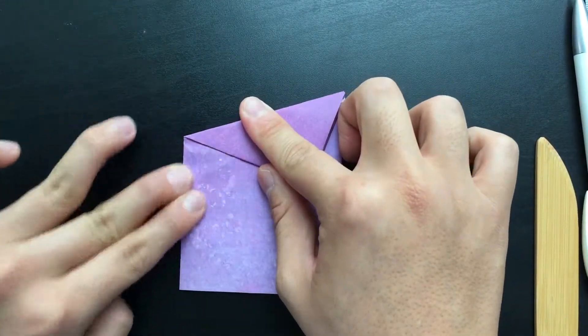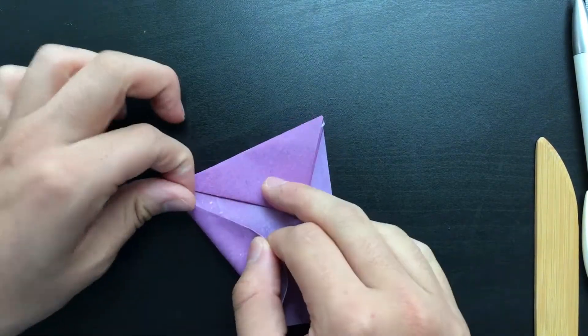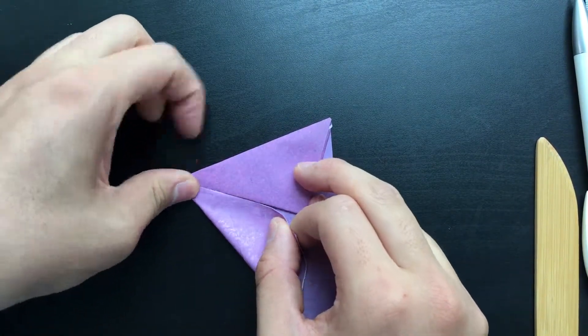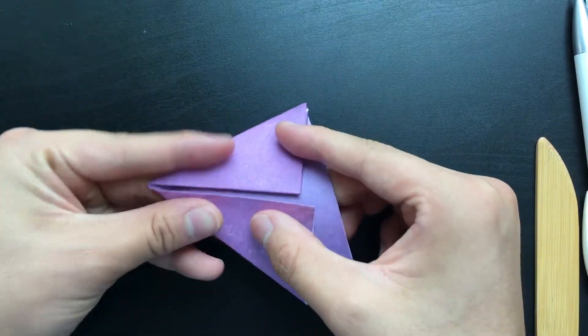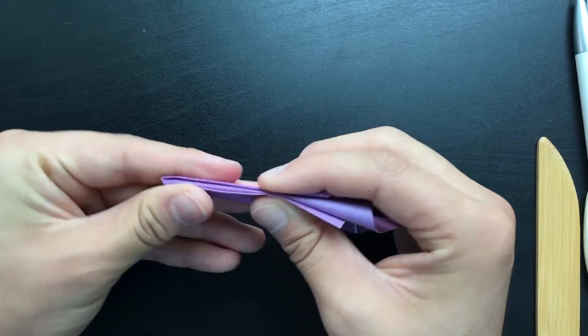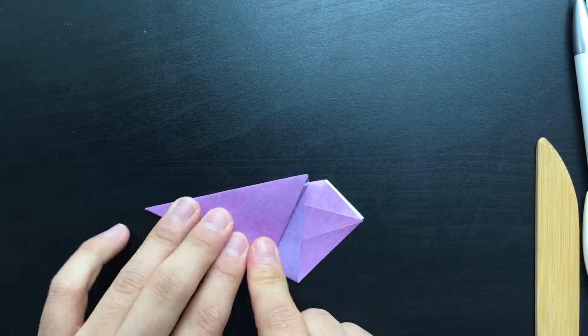Then, take the edge on the left and fold it up to the bottom edge of the triangle, like so. Next, you want to fold that part behind and fold basically where those two edges meet, like so. And what you'll end up with is something like this.